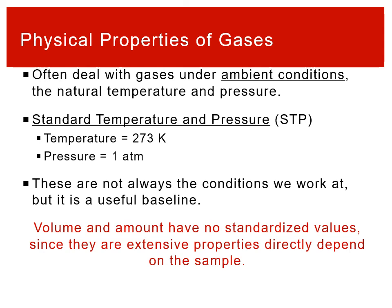Ambient conditions are whatever the natural temperature and pressure for your sample are. We can standardize these in what's called standard temperature and pressure, or STP. Standard temperature and pressure is a temperature of 273 Kelvin — that's zero degrees Celsius — and a pressure of one atmosphere. The idea is that these values give you a way to standardize what you're looking at. You could say 'I did this experiment at STP' and everyone would know what that means. These aren't what we always work at, but it's a standard value we can all reference.